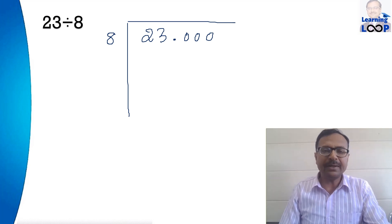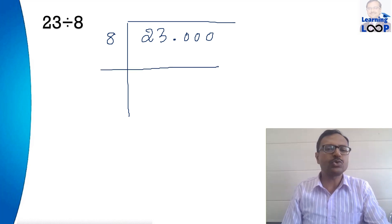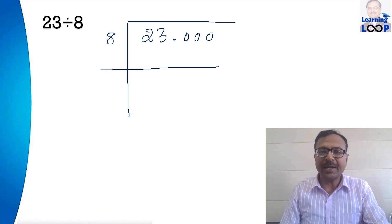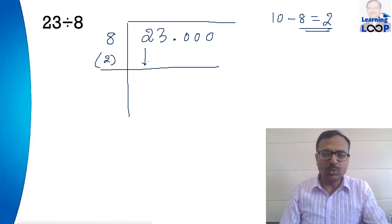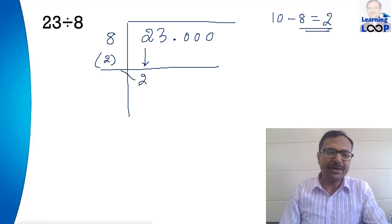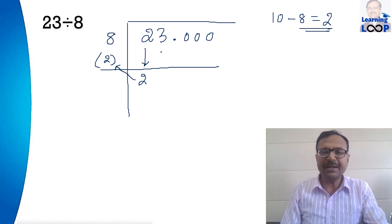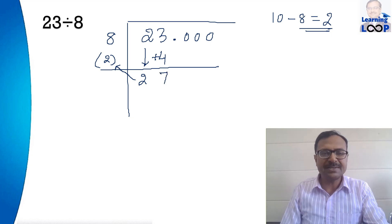The divisor 8 is very close to the base 10 and it has a deficit of 2, since 10 minus 8 is 2. I will write the deficit as 2, then bring down this 2 without any change and multiply it by the deficit. So I get 2 times 2 equals 4, which I write below 3, and 3 plus 4 gives me 7.